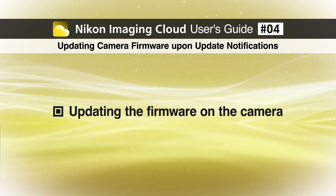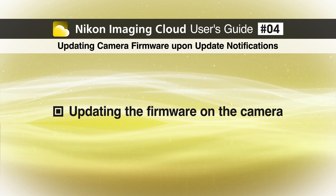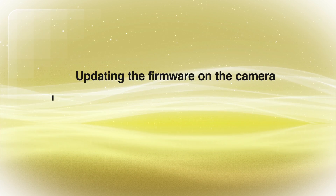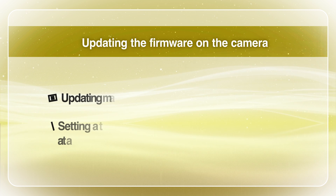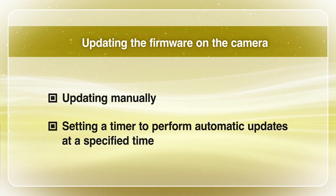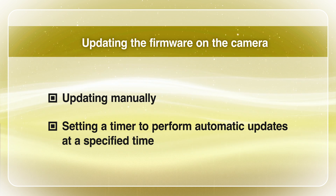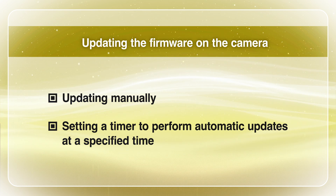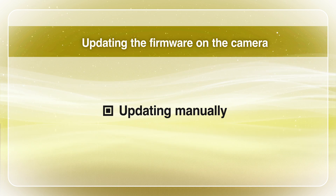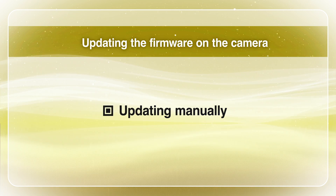Next, we will go over how to update the firmware using the camera. To run firmware updates on the camera, you can either run the update manually or set a timer so that the update is run automatically at a specified time. First, we will go over how to update the firmware manually.